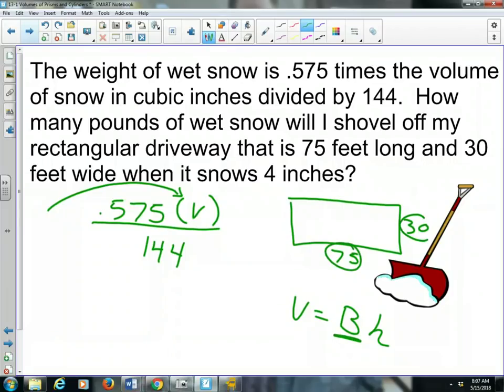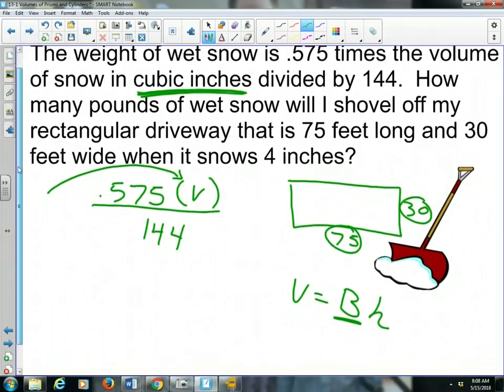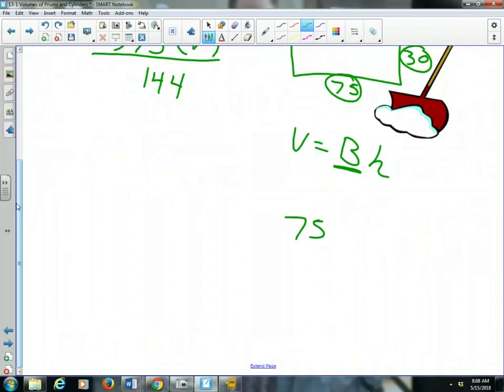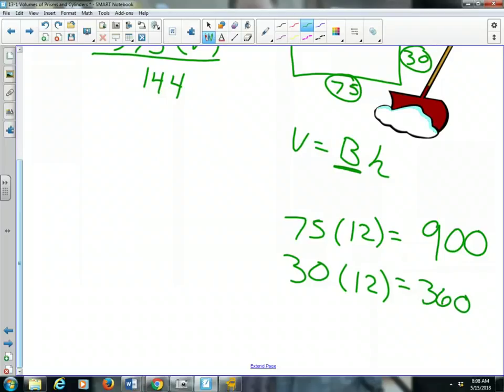However, I'm not going to take 75 times 30 because I need to get this in cubic inches. So let's convert our units into inches, shall we? How many inches long is my driveway? Well, 75 feet multiplied by 12 inches, my driveway is 75 times 12, which is 900 inches. In the same way, my driveway is 30 feet wide, so if I take 30 times 12, 30 times 12 is 360 inches.